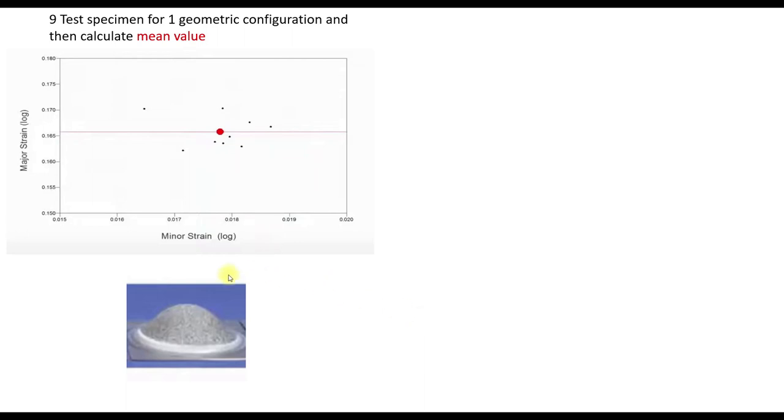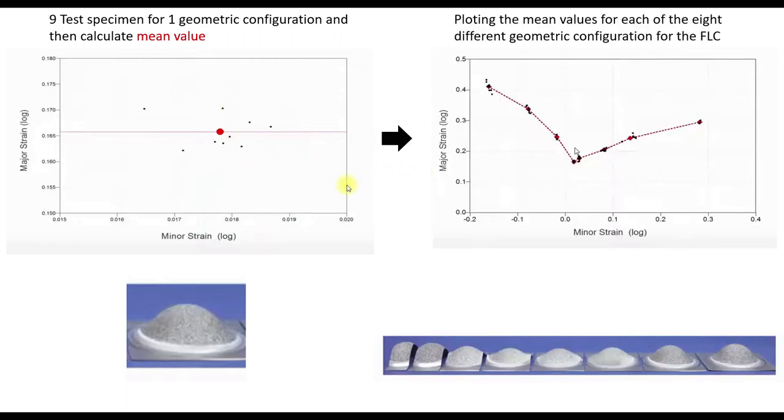So it works basically like this. We take one geometric configuration of the metal sheet and then we test the geometry 9 times. And then we get obviously 9 different values and then we calculate the mean value of this geometric configuration. And then we plot the mean values of each of the 8 geometric configurations and then we get the FLC.